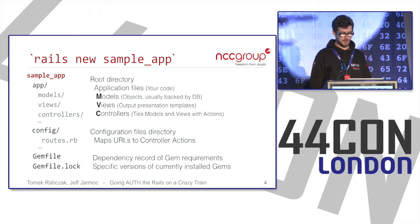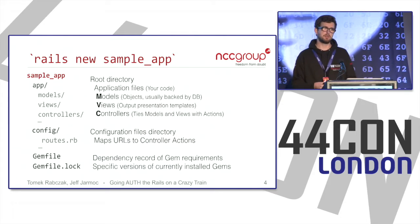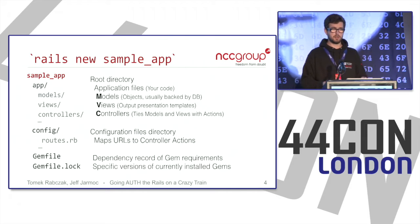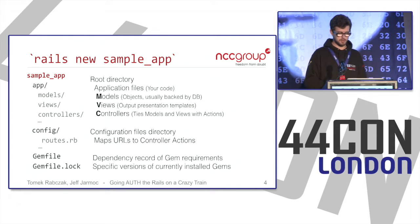There are two important files: the Gemfile, which lists all the gems or libraries in your Rails application, and Gemfile.lock, which shows the specific versions of gems installed. This is useful if you're looking for a specific vulnerable version of a gem — you'll tend to look in Gemfile.lock to see what version they're using.